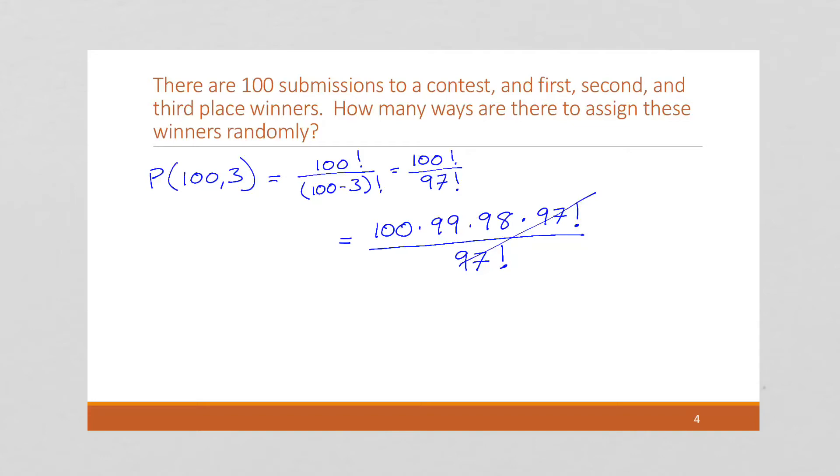And we can cancel that out. We're left with 100 times 99 times 98, which, if you get your calculator out, is 970,200.